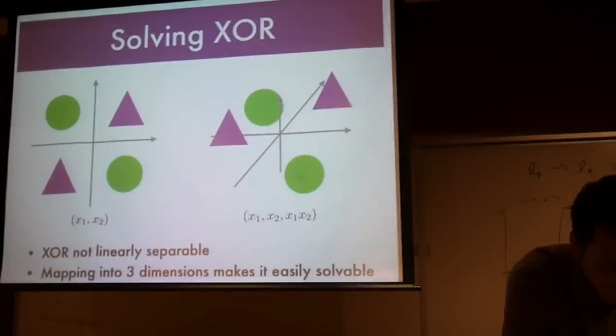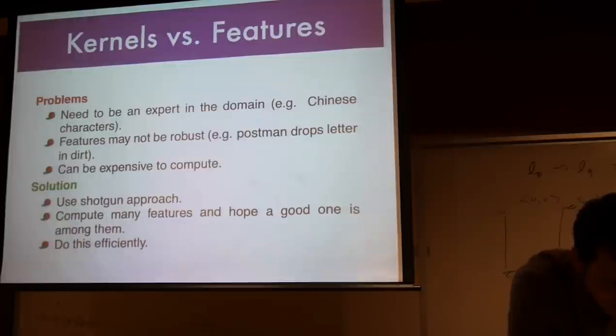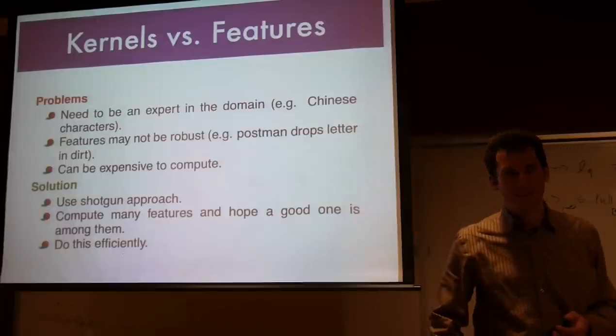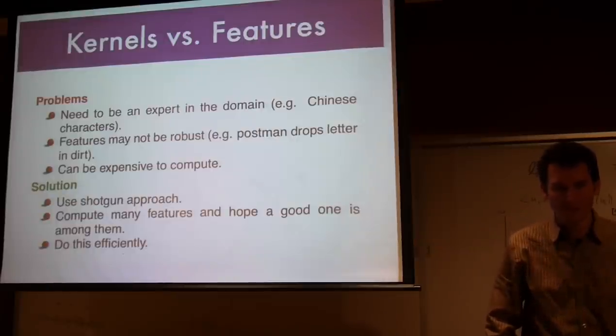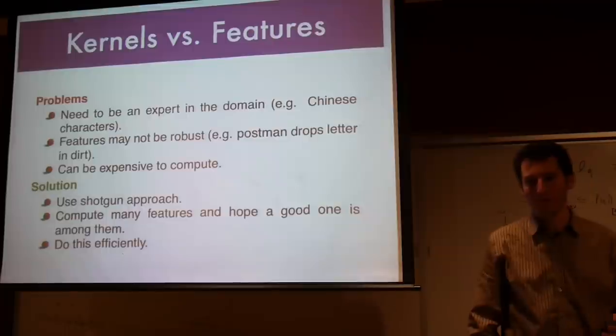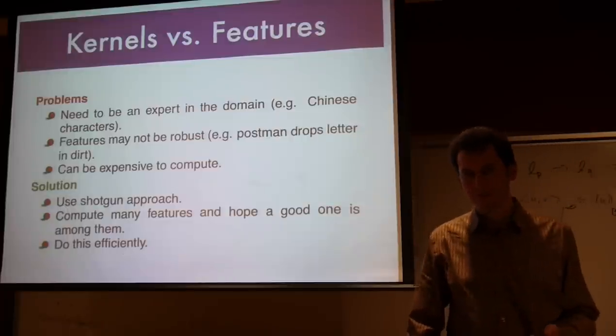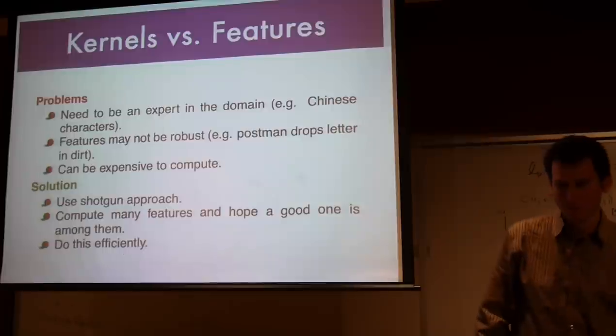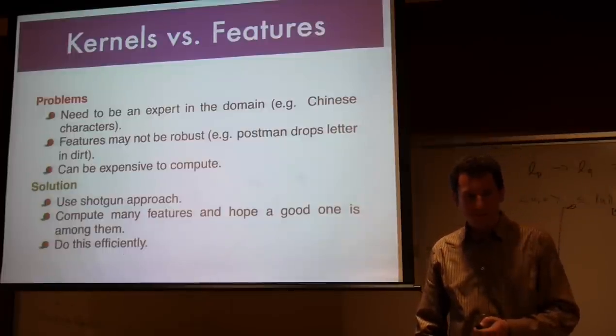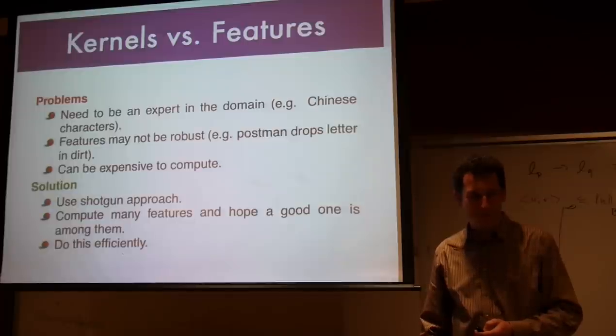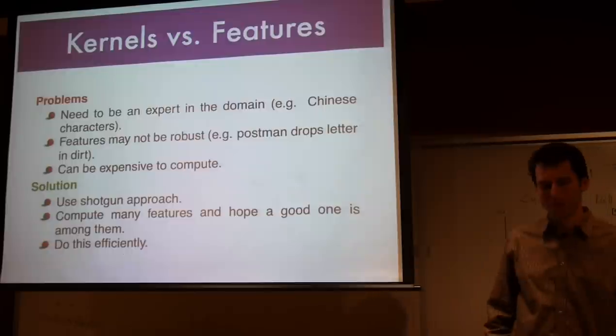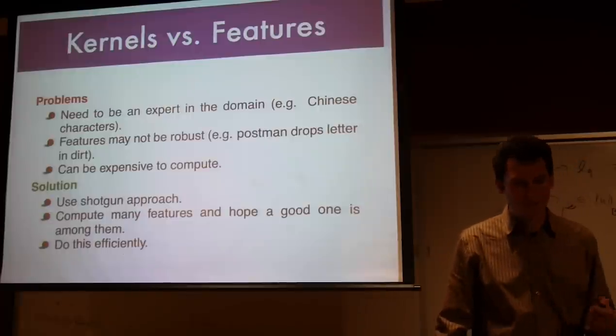Let's just recall from last week. XOR, of course, can't be solved in two dimensions, and in three dimensions we managed to do it easily. Why would you use kernels rather than feature maps? With feature extraction, you need to be actually an expert of the domain. In some cases, that may be worth it if you care a lot about computational speed, then it pays to maybe hire a couple of people to solve a very special problem. Like for search and recommendation, it pays to have a natural language processing team that knows which features are meaningful. What you can do instead is you just use a shotgun approach. Since you don't know exactly what you're aiming for, you just aim for everything. You compute a lot of those features and you just hope that you find a good one among them.